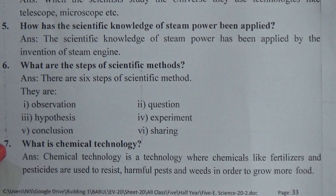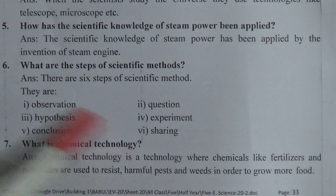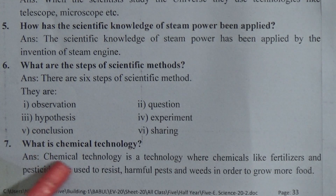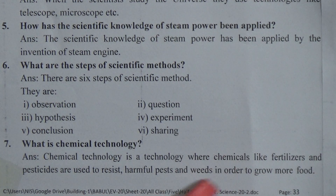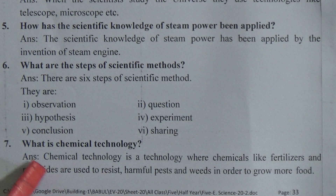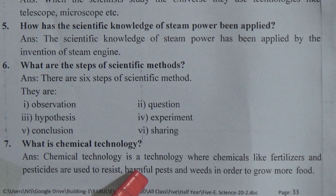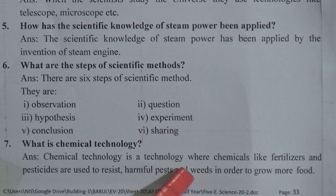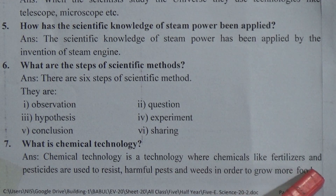Question 7: What is chemical technology? Answer: Chemical technology is a technology where chemicals like fertilizers and pesticides are used to resist harmful pests and weeds in order to grow more food.